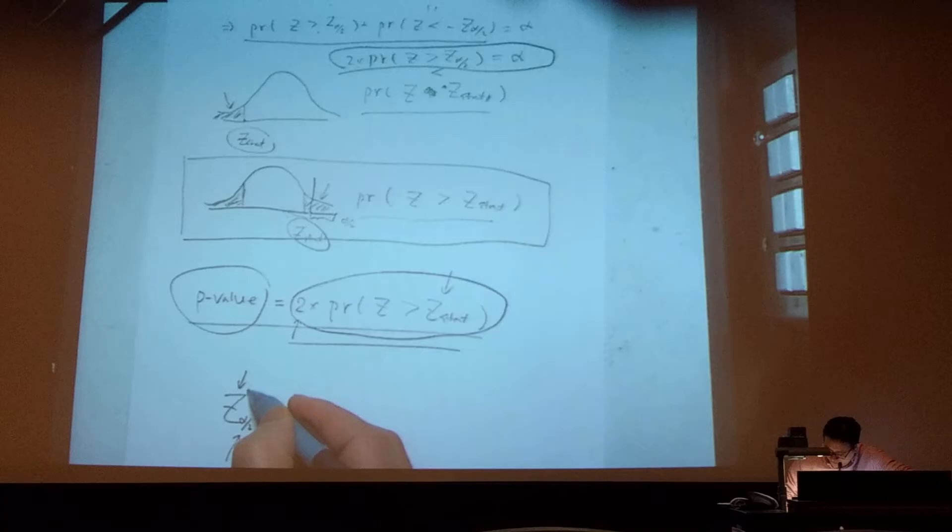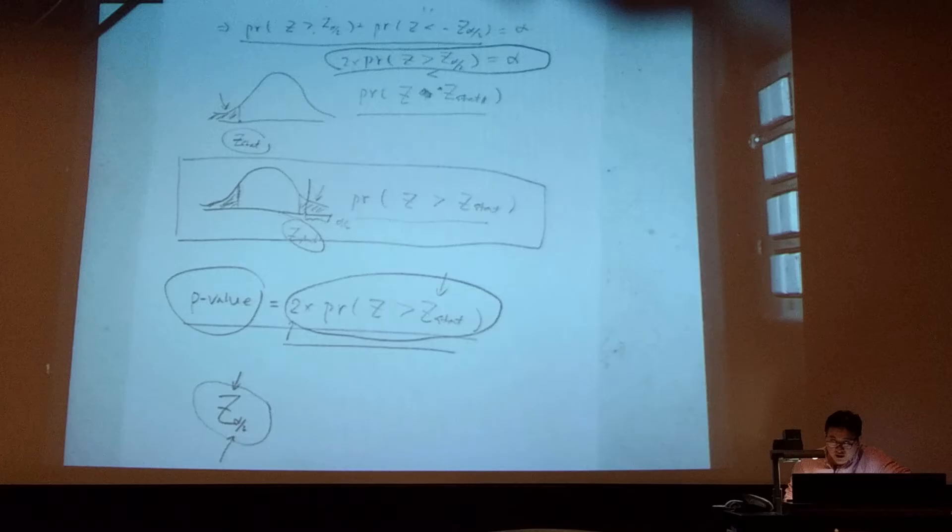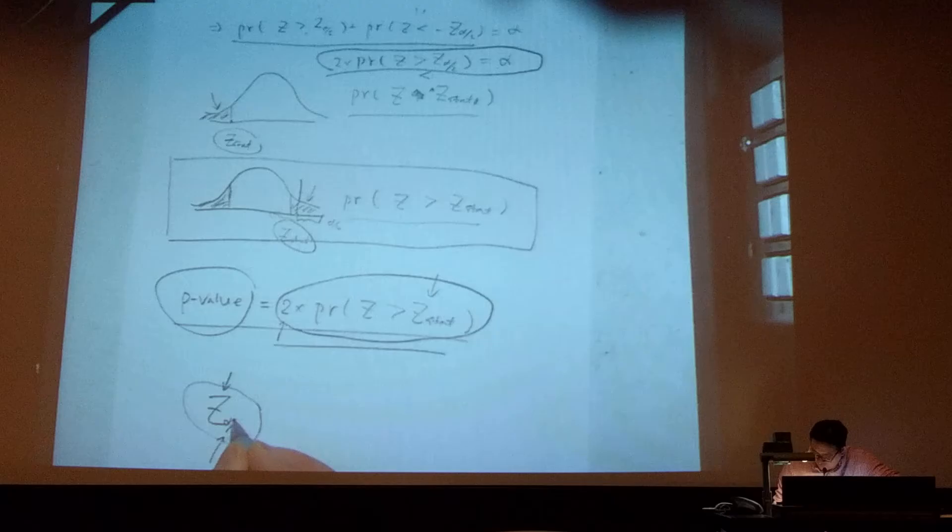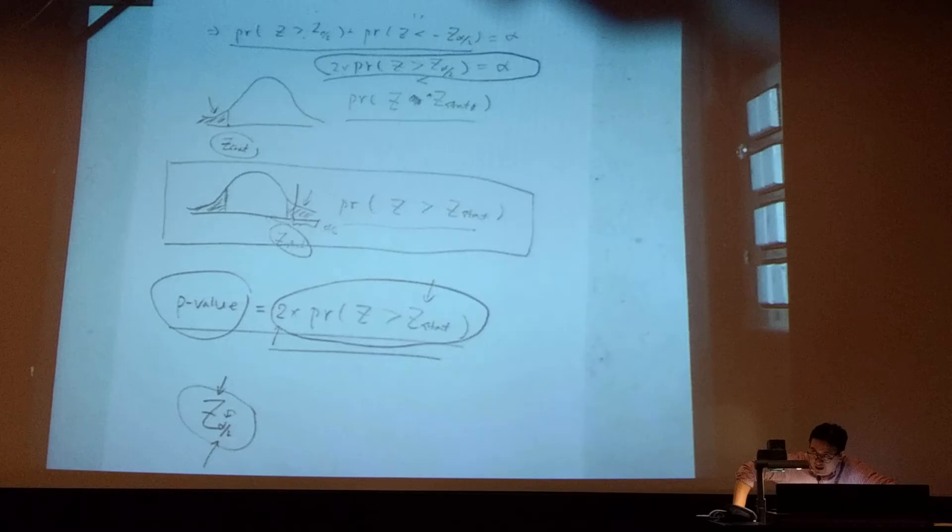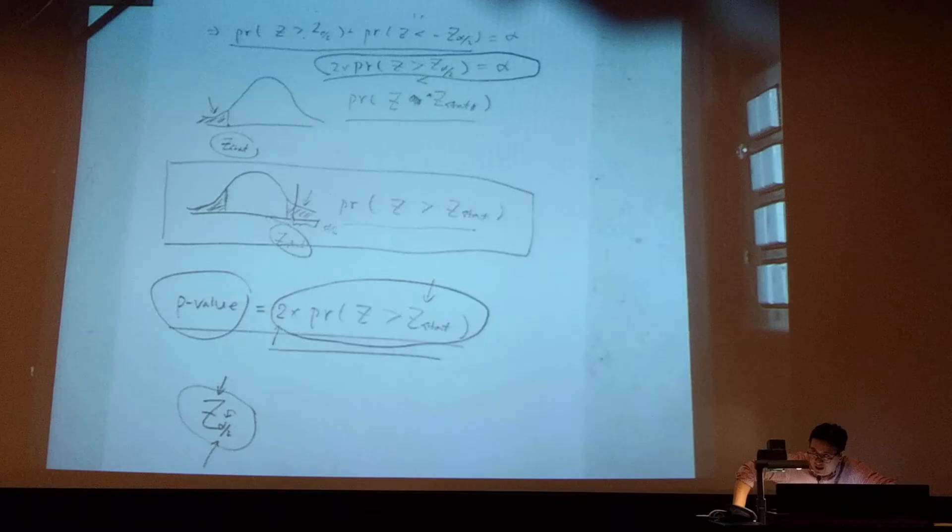So you see that now, the critical value actually has two components, right? This indicates the sampling distribution. This indicates the assumption of the significance level. So basically, if you're using this one, critical value, compared to the test statistics, you have one decision.